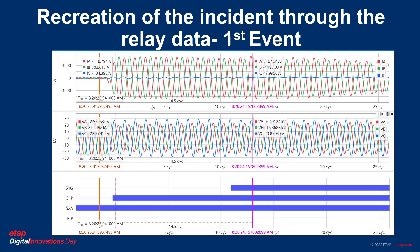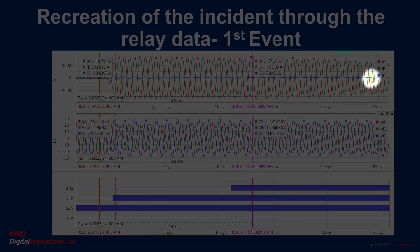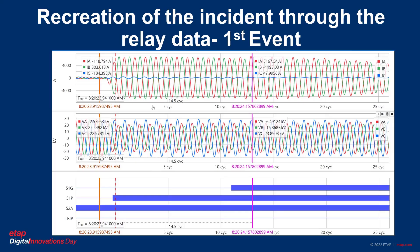One cycle is equal to 16 milliseconds. The curves are color coded and the legend shows here on the right. Red, green, blue respectively for IA, IB, and IC. IA, IB, and IC are instantaneous values, not root mean square or RMS. I could have inserted the RMS value but did not want the graph to look too busy. Voltages are in the middle graph and have the same interface as the current graph.